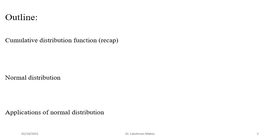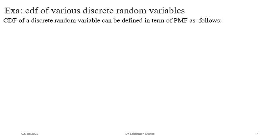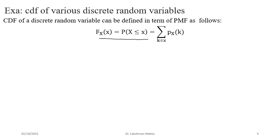Coming to the first part of this lecture — the CDF of a random variable. In the last class I had already discussed this in detail, so first I will talk about the characterization of the CDF of various discrete random variables and what kind of behavior it will have. From the definition of CDF, we say that CDF is defined as the probability up to x. If x happens to be a discrete random variable, then we sum up all values of the probability mass function up to x.